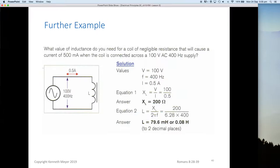Then we transpose our XL equals 2πfL. So L is equal to XL divided by 2πf, and we get 200 divided by 6.28 multiplied by 400. So that gives you some idea of how you can use those formulas to work out currents and inductances and reactances around an AC circuit.